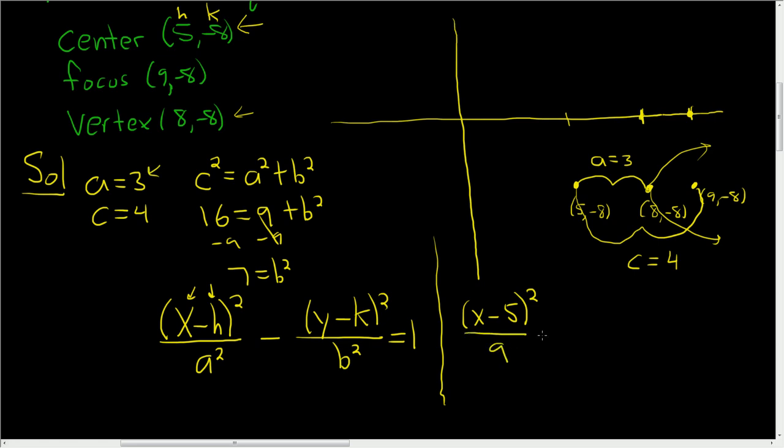So you get 9 minus, and then y minus negative 8. So it's y plus 8, and then b squared was 7, and this is equal to 1. That's it.